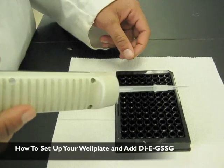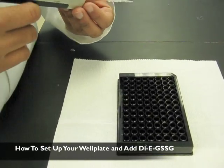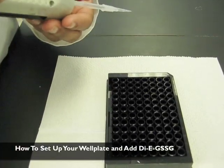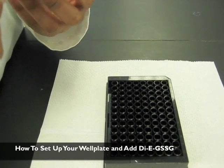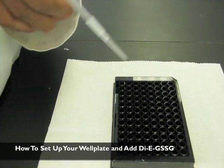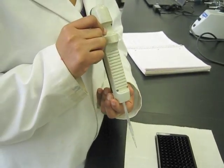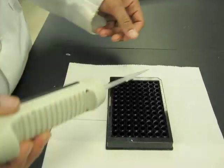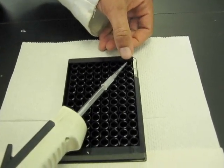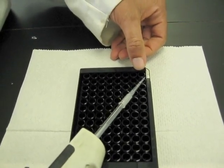We'll be working in a matrix of six by six. The thiol solution will already be in the plate, and you're going to add the di-eosin glutathione disulfide with a repeat pipetter as quickly as possible.